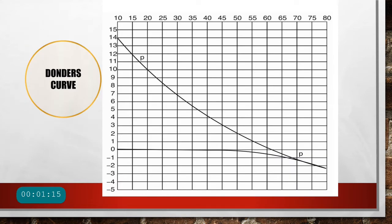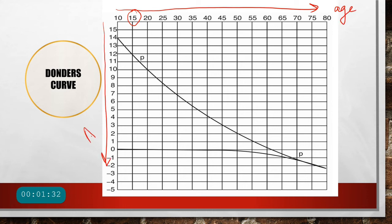We have a Donders curve which tells us about the amplitude of accommodation with increasing age. The x-axis represents age and the y-axis represents amplitude of accommodation. At 15 years of age the amplitude is about 12 diopters; at 40 years it comes to about 4 diopters; and near 60 years it is between 0 and 1 diopter, actually becoming even negative. So as age increases, the amplitude of accommodation decreases, as represented by the Donders curve.